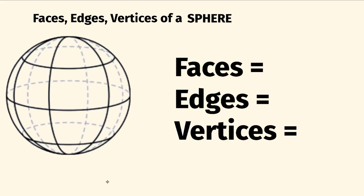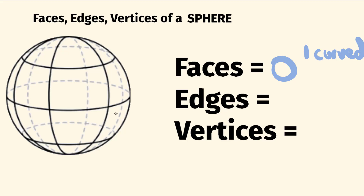So let's start with the number of faces. This is the amount of flat surfaces. So you can imagine with a sphere, the number of flat surfaces — it's one thing you are not going to find. A sphere has zero faces, but what it does have around the outside here is one curved surface. Not quite a face because it's not flat, but it is a curved surface, and that's how you may hear it described.